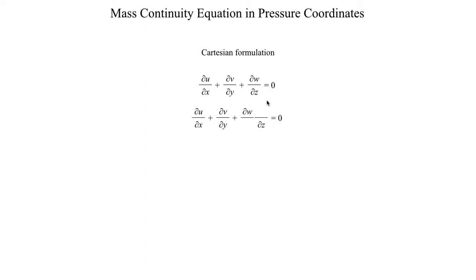What we can do is invoke the chain rule to modify the term dw/dz. The x and y coordinates stay the same — as mentioned in the previous segment, when you go from Cartesian to pressure coordinates the only thing that changes is the vertical coordinate, from z to pressure. So the only thing we need to worry about is how this vertical term changes.